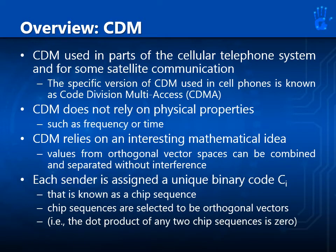CDM is used in parts of the cellular telephone system and for some satellite communication. The specific version used in cell phones is known as code division multiple access or CDMA. CDM does not rely on physical properties such as frequency or time. Instead, CDM relies on an interesting mathematical idea: values from orthogonal vector spaces can be combined and separated without interference. Each sender is assigned a unique binary code — C sub i — known as a chip sequence. Chip sequences are selected to be orthogonal vectors, meaning the dot product of any two chip sequences is zero.